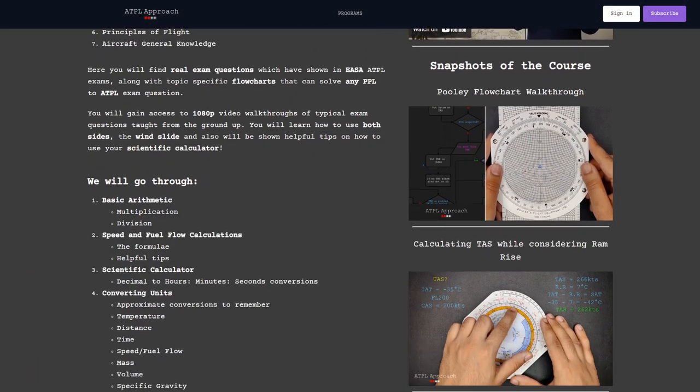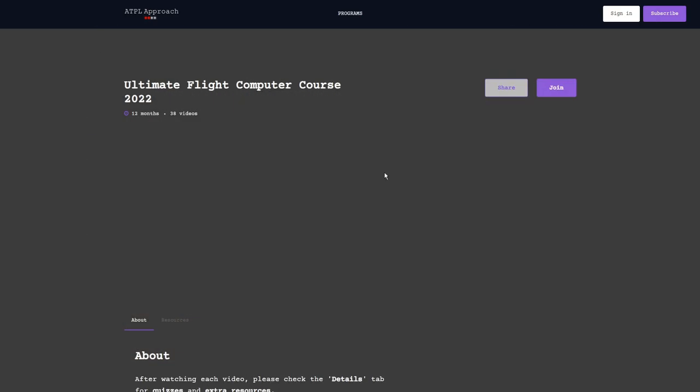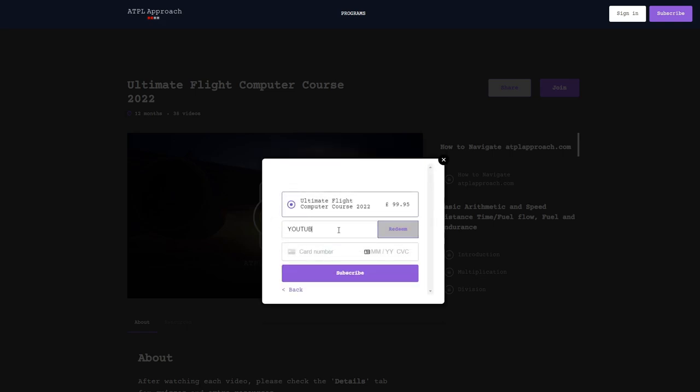I hope you learned something from that video. There'll be plenty more to learn with the all-encompassing CRP5 course that it's within so don't delay head over to the website atplapproach.com and use that discount code YouTube75OFF. You can see that the website says one month off but that's just an error from the website host. The course cost is only a one-time fee and you'll have access to it for life. Thanks and see you soon.